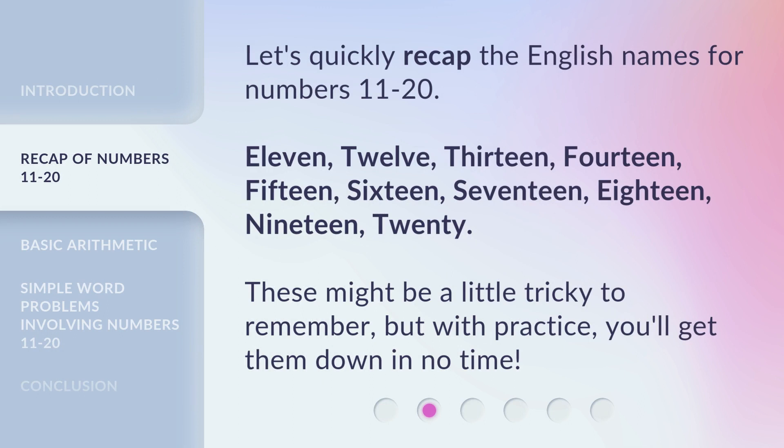Let's quickly recap the English names for numbers 11 to 20: eleven, twelve, thirteen, fourteen, fifteen, sixteen, seventeen, eighteen, nineteen, twenty.